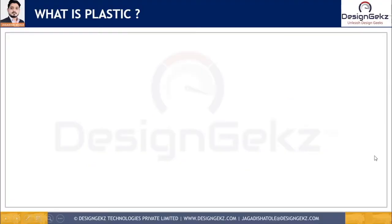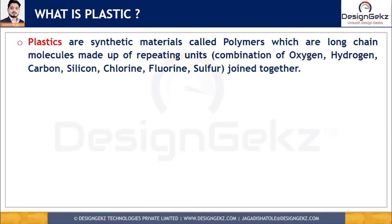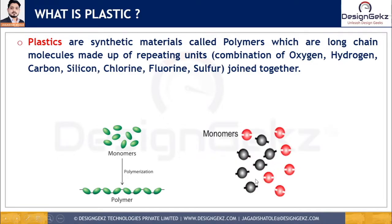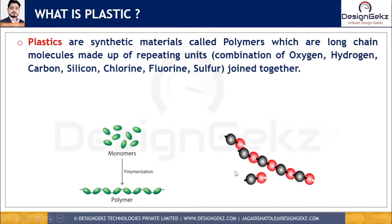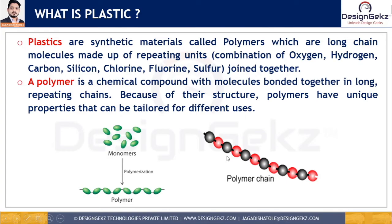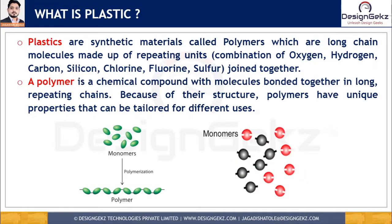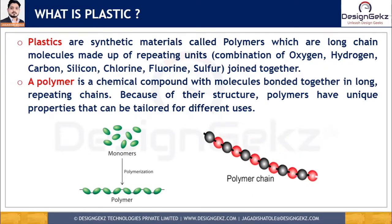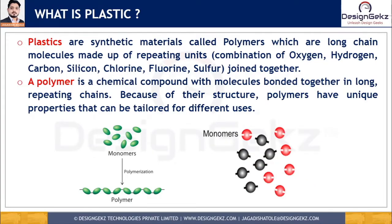What is plastic? Basically, plastics are synthetic materials called polymers, which are long chain molecules made up of repeating units. These are a combination of hydrogen, oxygen, carbon, silicon, chlorine, fluorine and sulphur, which are joined together to form a polymer chain. This polymer is a chemical compound with molecules bonded together in long repeating chains, and because of this structure, polymers have unique properties that can be tailored for different uses — that's the beauty of plastics.